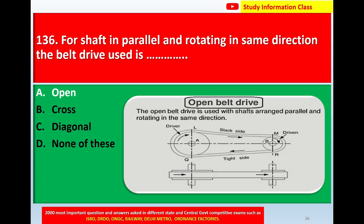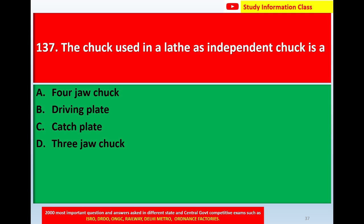Question number 137: The chuck used in a lathe as an independent chuck is — option A four-jaw chuck, option B driving plate, option C catch plate, option D three-jaw chuck. The correct answer is option A: four-jaw chuck.